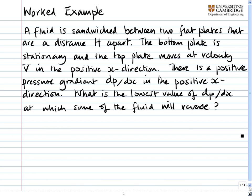A fluid is sandwiched between two flat plates that are a distance h apart. The bottom plate is stationary and the top plate moves at velocity V in the positive x direction. There is a positive pressure gradient dp/dx in the positive x direction. What is the lowest value of dp/dx at which some of the fluid will reverse?